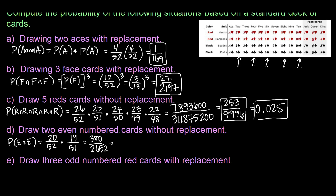Reducing that, I get 95 out of 663 as my fully reduced fraction. Converting that to a decimal, that is approximately 0.14 — so about a 14% chance of that happening.